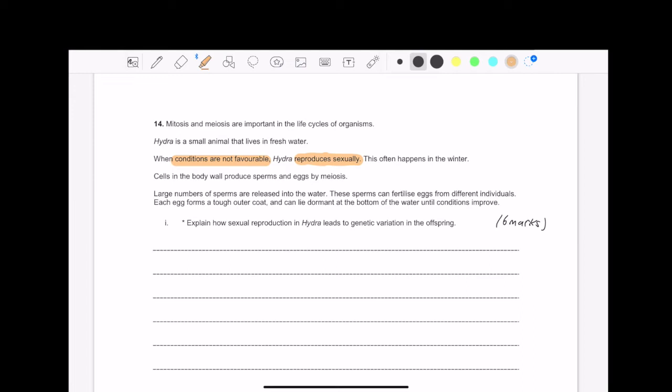And then it says cells in the body wall produce sperm and eggs by meiosis. So they produce both of them, both sperm and egg, which is uncommon. Then it says, large numbers of sperm are released into the water. So they're releasing it. So that means any individual can fertilize it. Do you see where I'm going with this? Genetic variation.